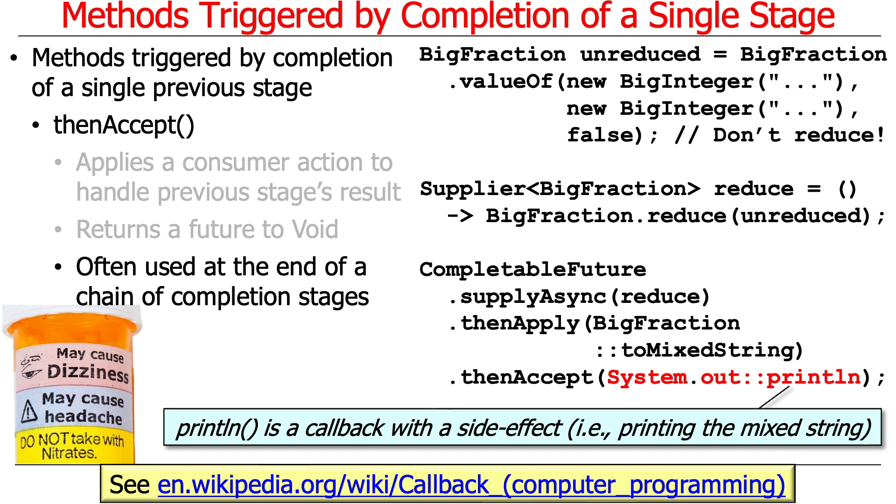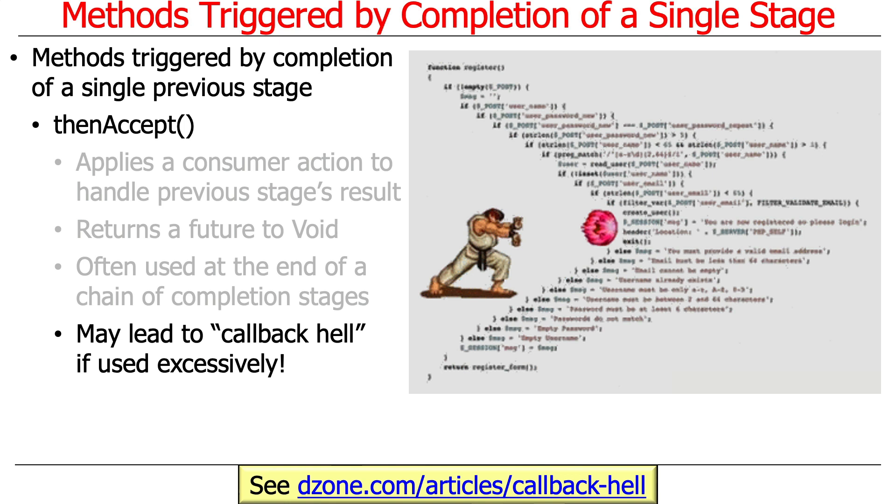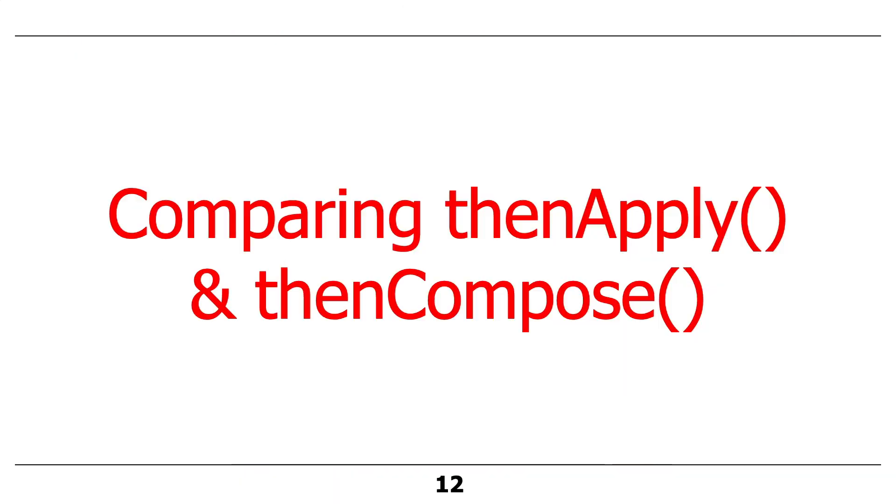You don't always use thenAccept, but for situations like this, it can come in handy. The downside with using thenAccept, if you get carried away with it, which you should not do, is you can end up with something known as callback hell. This is a problem that occurs particularly with misuses of JavaScript and their callback-based promises and asynchronous future-based API calls. So don't end up with this kind of nested callback hell. Use thenAccept very sparingly, typically just at the very end of a chain of completion stages.